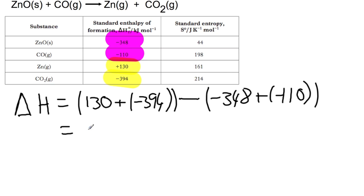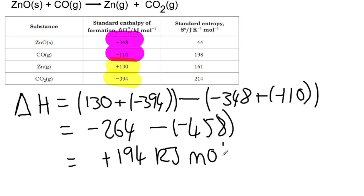So here we have minus 264 minus negative 458. So in total we'll have a positive enthalpy change of 194 kilojoules per mole. This is an endothermic reaction.